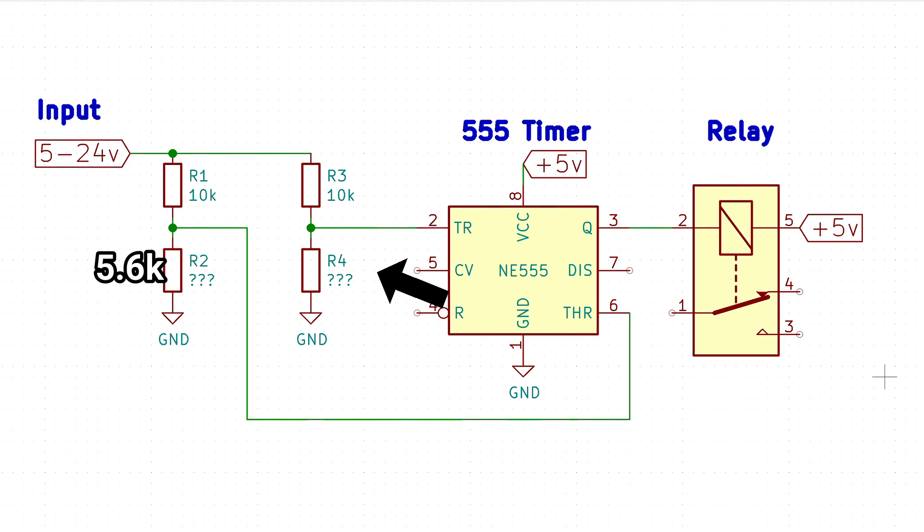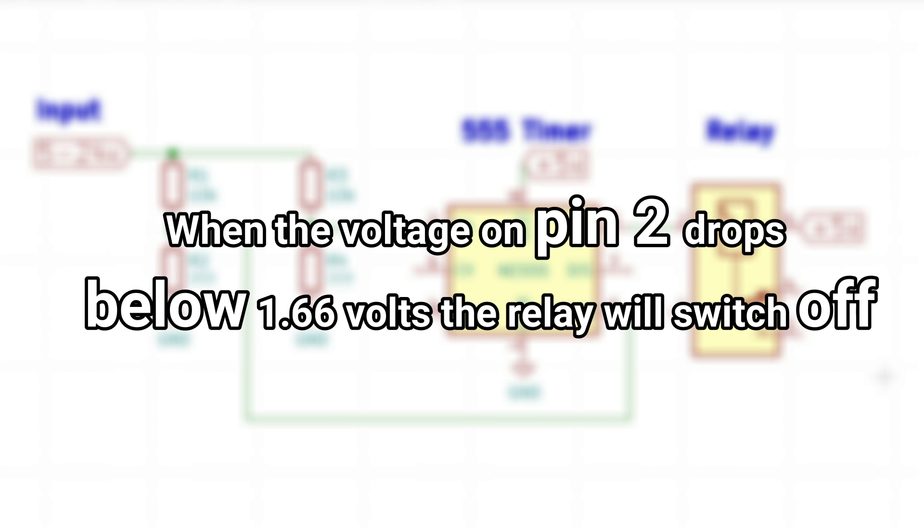Now I just need to repeat this process for resistor R4. Pin 2 of the timer determines the cutoff voltage which switches off the relay. When the voltage on pin 2 drops below 1.66 volts the relay will be switched off.